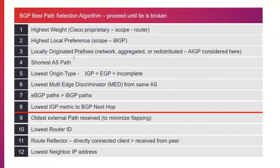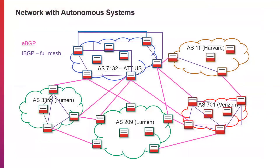If none of these break the tie, the next thing we look for is the shortest AS path. BGP isn't going to know every hop through the network — say a user in AS3356 wanted to access a computer at Harvard. BGP will know that it traverses this AS, this AS, and this AS to get there, forming one AS path. Another AS path to Harvard might traverse a different set of ASs and be longer. We would choose the path with the fewest ASs traversed.